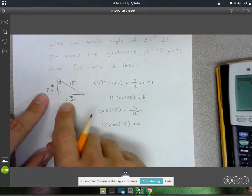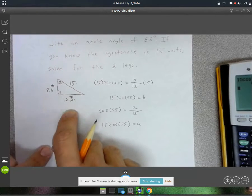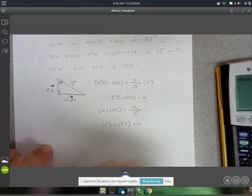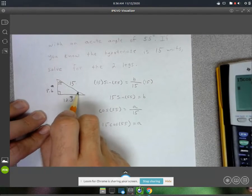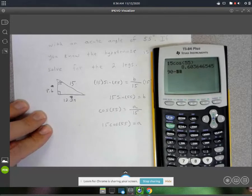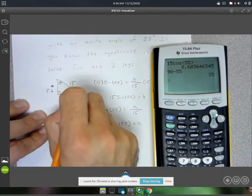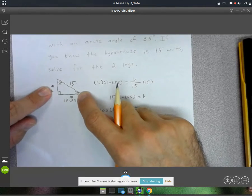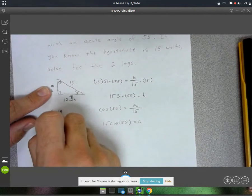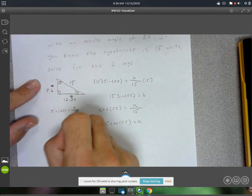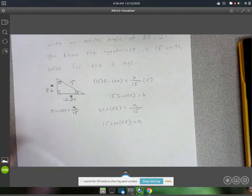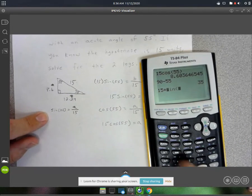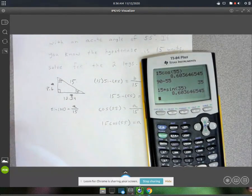If you wanted to, after you got the first side, you could have used the Pythagorean theorem: 15 squared minus this one squared equals that one squared. Or you could have solved for the other angle, which is 90 minus 55, so 35 degrees. Then to solve for this side, you could have used sine of 35 equals A over 15. Times by 15, that's 15 times sine of 35, and you would have got the same answer. Lots of ways to do these.